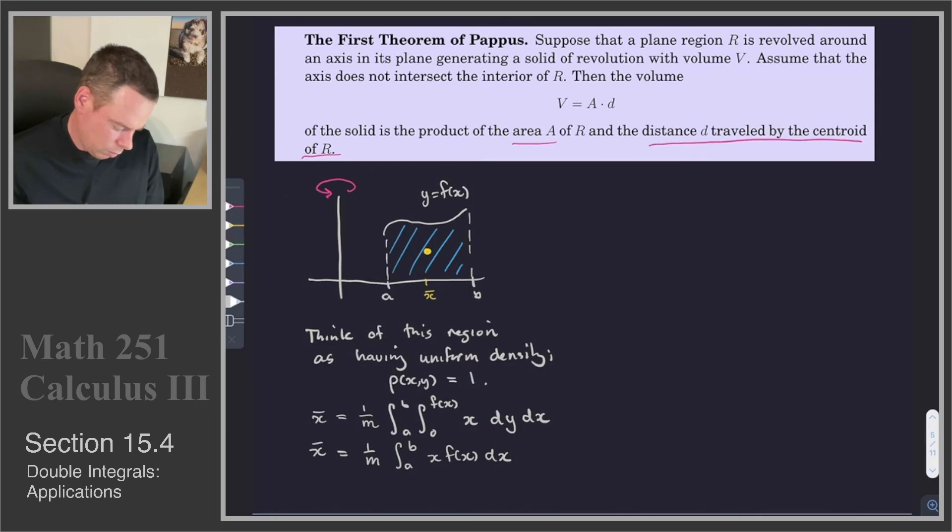The last thing to note with this integral is what is mass? Since we have constant density 1, mass is just the area. So really, the very last thing to note is that this is just 1 over A times the integral from a to b of x f(x) dx, and that's because constant density 1 means that mass is equal to area.